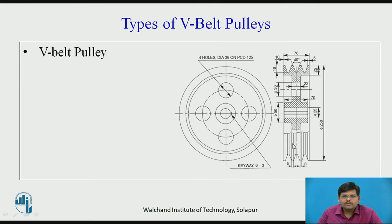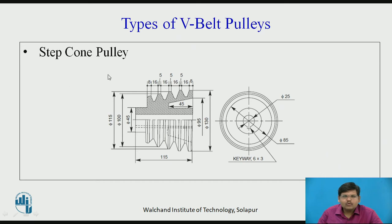Types of V-belt pulleys: on the screen you can see a V-belt pulley. In this gap a belt passes, and three belts can be mounted on this single pulley shown on the screen. The belt used for V-belt has a V-shape or trapezoidal cross section. Further, the step cone pulley — the function and working of this step cone pulley is similar to what we have seen in the case of flat belts, only the belt used is a V-belt and the pulley has a wedge-shaped groove.